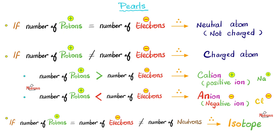If the number of protons equals the number of electrons, you have a neutral atom that carries no charge — neither positive nor negative. However, if the number of protons is not the same as the number of electrons — either positive is winning or negative is winning — then it's a charged atom. If the protons exceed the number of electrons, it's a positive ion called a cation, such as sodium +1. If the number of electrons exceeds the number of protons, you get a negative ion called an anion, such as chloride −1.